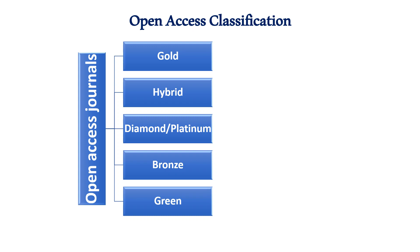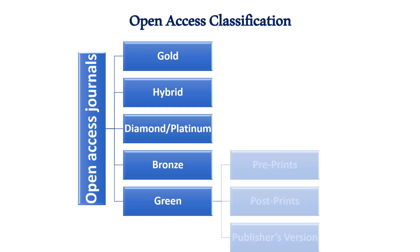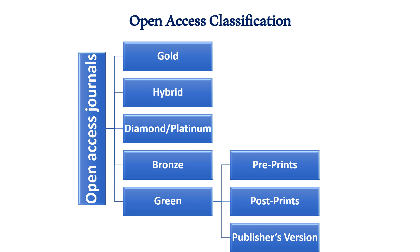Bronze journals are free to read online but do not have a license, so they are not generally available for reuse. Green open access refers to self-archiving — generally the pre-print or post-print of an article in a repository. In green open access, there are three categories: pre-print (before peer review and publication), post-print (the author's copy after review and correction but before publisher formatting), and the publisher's version (the final formatted version appearing in print or online).